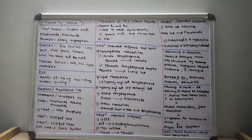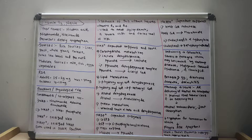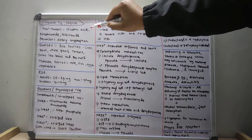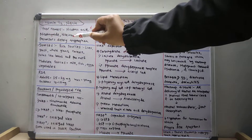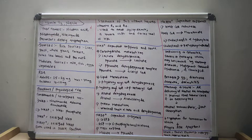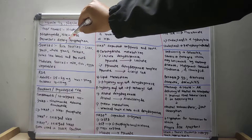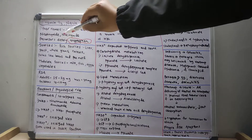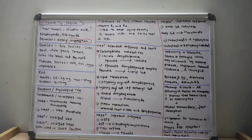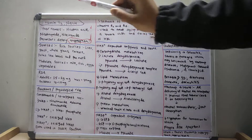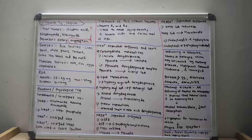Vitamin B3 is also called niacin. Its other various names are nicotinic acid, nicotinamide, and niacinamide. The main precursor of vitamin B3 is dietary tryptophan, which is a neutral amino acid.